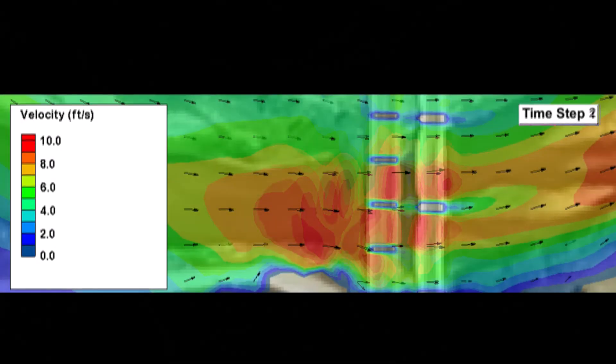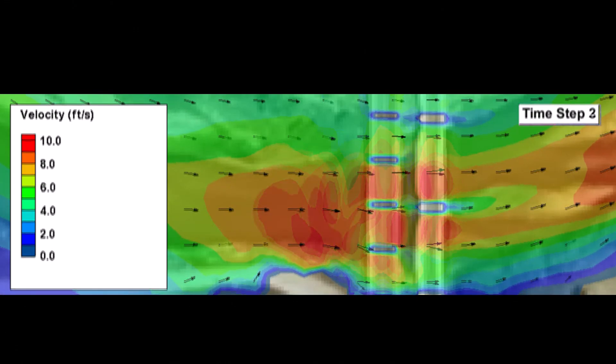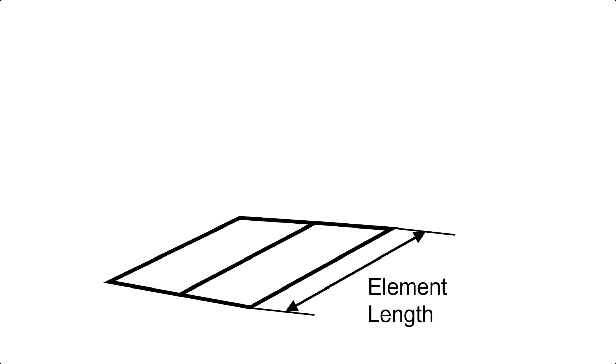Instabilities may form in the model when the element size is significantly less than the flow depth, particularly when the bridge experiences pressure flow conditions. The model stability is only sensitive to the length of the elements, not the width.